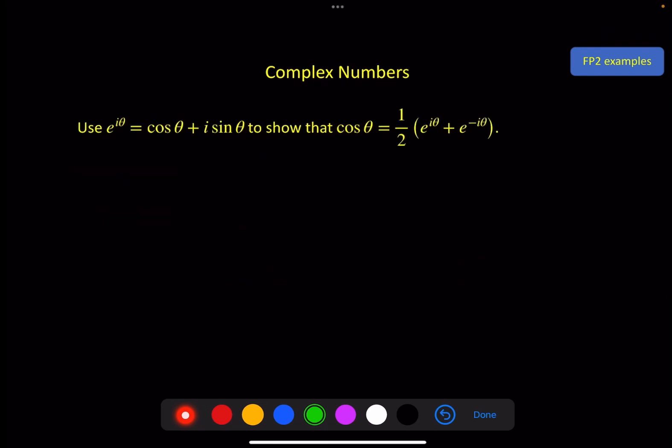Finally we've got an example here just to show a little relationship and this gives you just a little taster of how useful this relation is. We can show that this is true by looking at the two bits in here, e to the iθ we know is equal to this and e to the minus iθ I can put that in and see what we get. So e to the iθ is cos θ plus i sin θ.